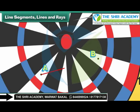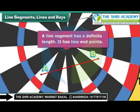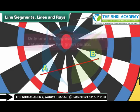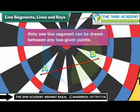We now join the line segment. A line segment has a definite length. It has two end points. Only one line segment can be drawn between any two given points.